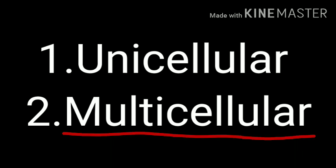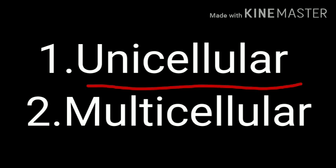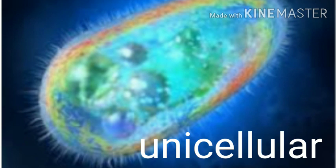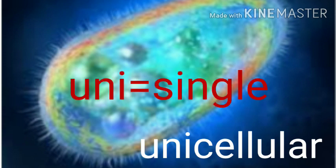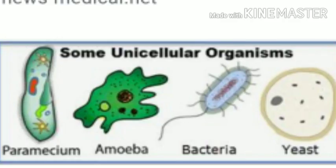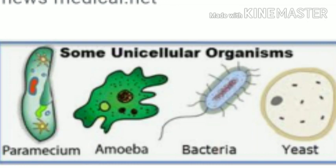Organisms having a single cell and completing all their activities in one cell are called unicellular — uni means single. For example, Chlamydomonas, Paramecium, and Bacteria are unicellular organisms.